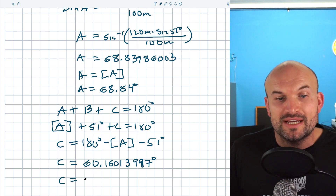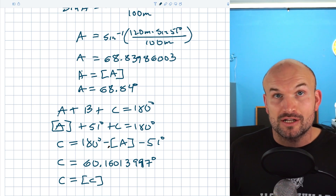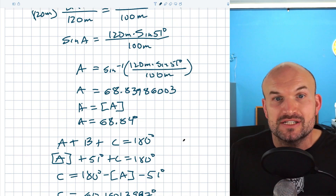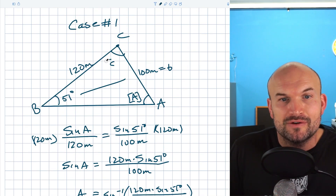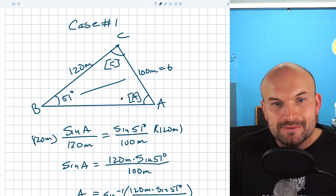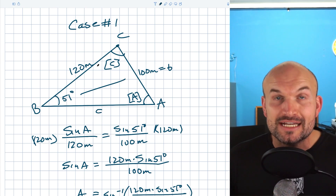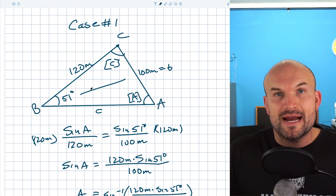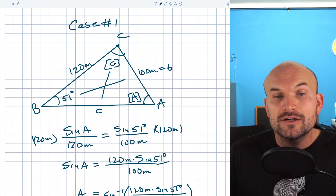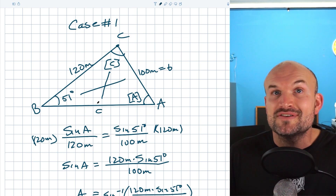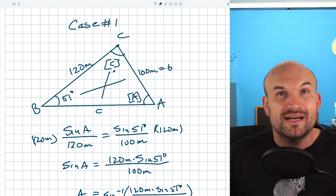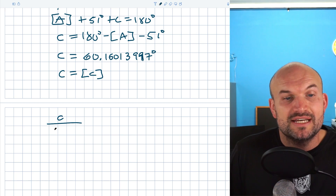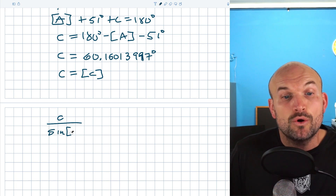Just like I did for A, I'm going to store this answer C in my calculator because we have to use this value one more time — to apply the Law of Sines to find side length c. Going back to our original problem, now that I have my value of C stored, I need to find side length c. I can use the original ratio and now add a ratio of angle C with the missing side length c.